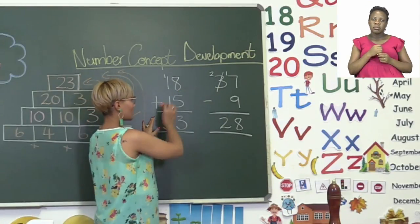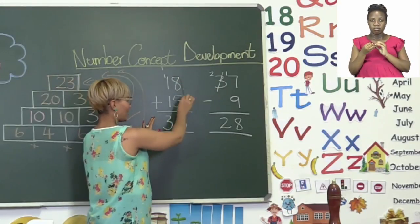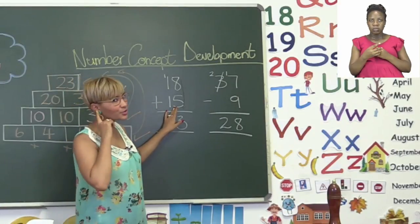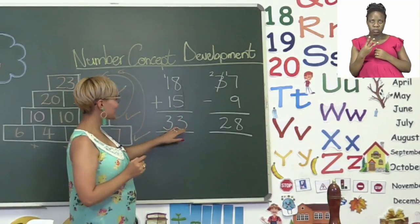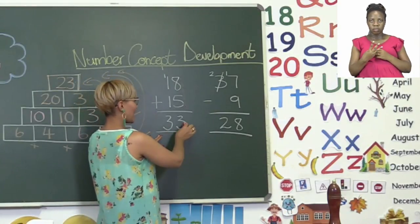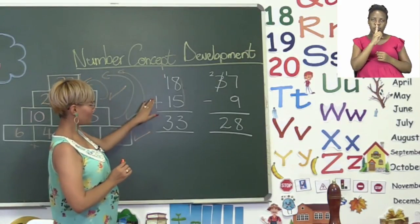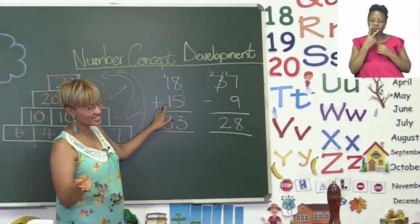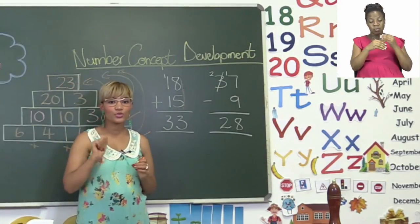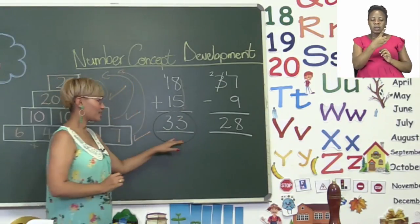18 plus 15. Remember we start with our units. We add our units together. 8 plus 5 and 8 plus 5 is equal to 13. Good job everyone. So we write the units in here and we carry over our tens. So now we say 1 plus 1 we know is 2 plus another one is equal to 3. So here we now have our answer which is 33.